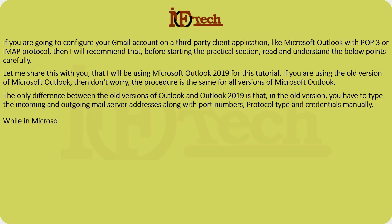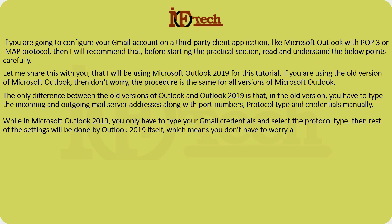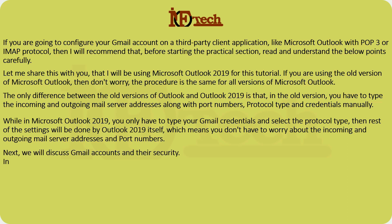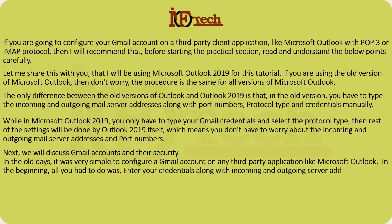While in Microsoft Outlook 2019, you only have to type your Gmail credentials and select the protocol type — the rest of the settings will be done by Outlook 2019 itself, which means you don't have to worry about incoming and outgoing mail server addresses and port numbers. Next, we will discuss Gmail accounts and their security. In the old days, configuring a Gmail account on any third-party application like Microsoft Outlook was very simple — all you had to do was enter your credentials along with incoming and outgoing server addresses and generic port numbers.